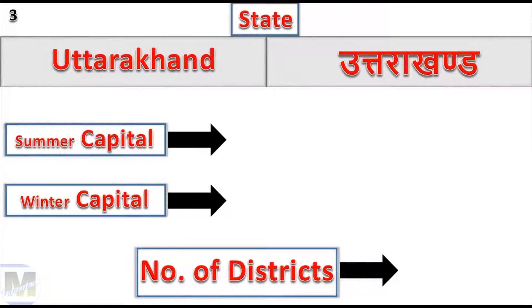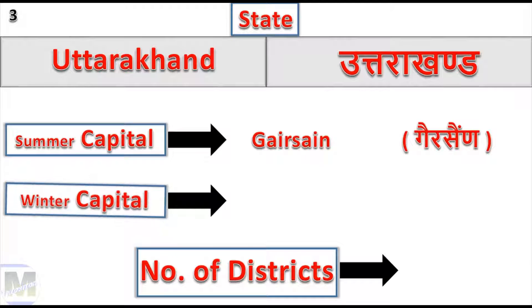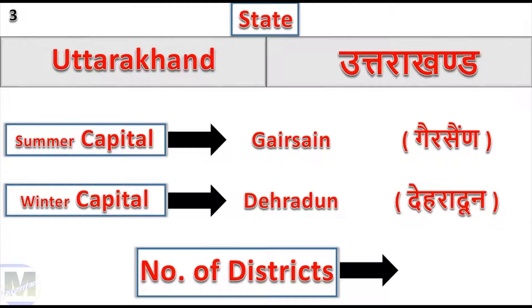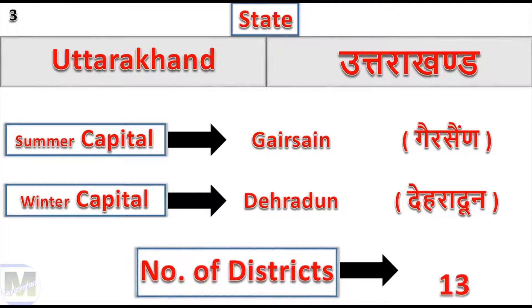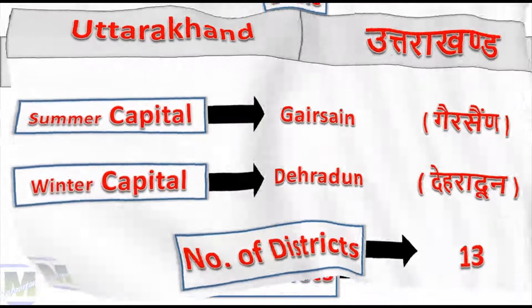Uttarakhand: Summer Capital Gairsain, Winter Capital Dehradun, Number of Districts: 13.